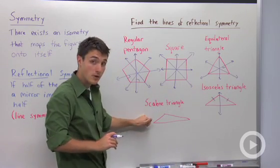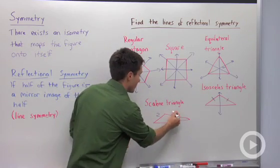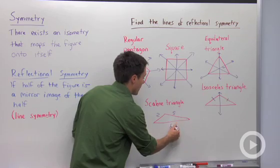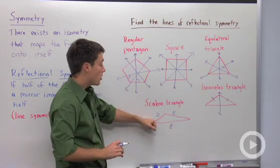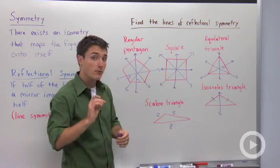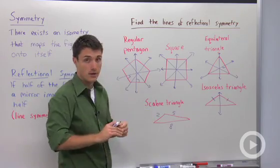If we're talking about a scalene triangle, where let's say we gave these side lengths of two, five, and eight, there are no lines of symmetry, of reflectional symmetry, of the scalene triangle.